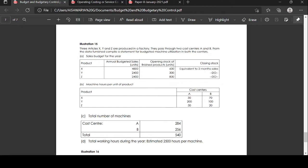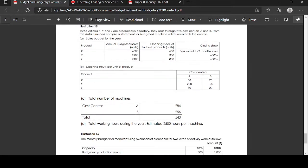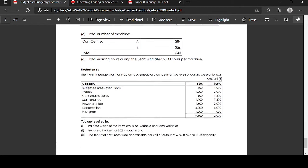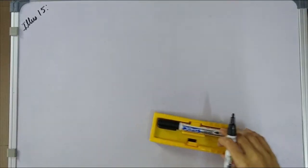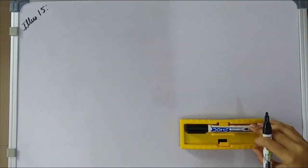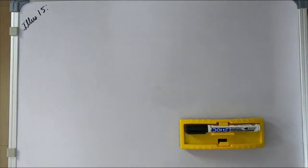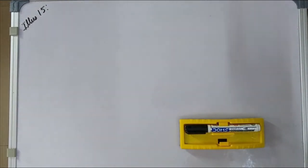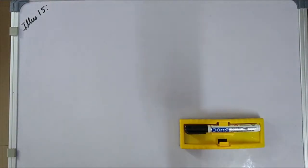The total working hours during the year is estimated as 2,500 hours per machine. What we have to prepare is a statement for budgeted machine utilization for both cost centers A and B.